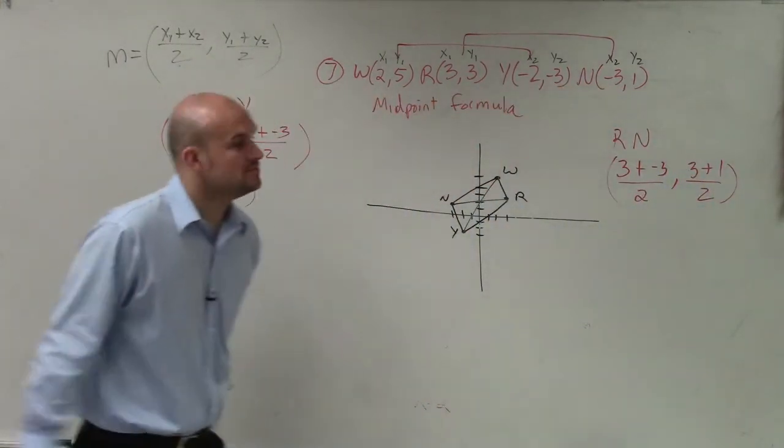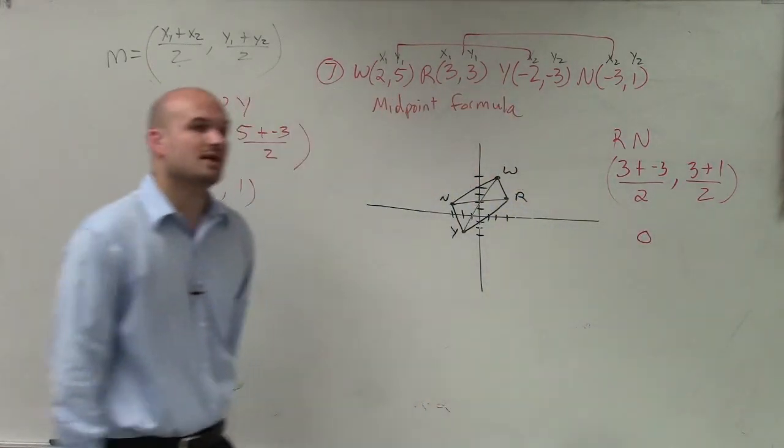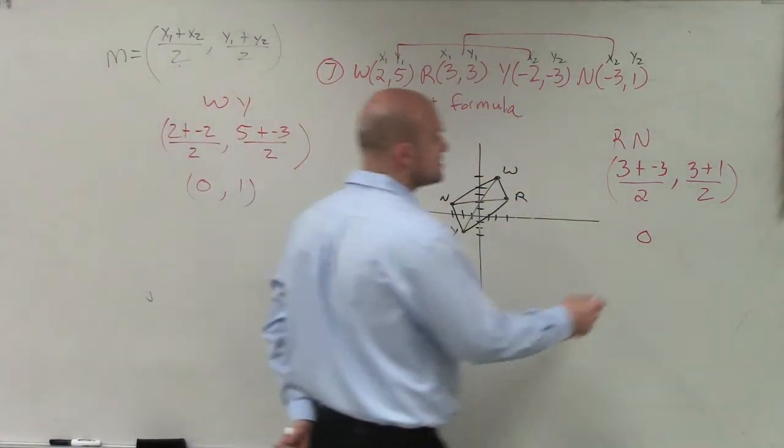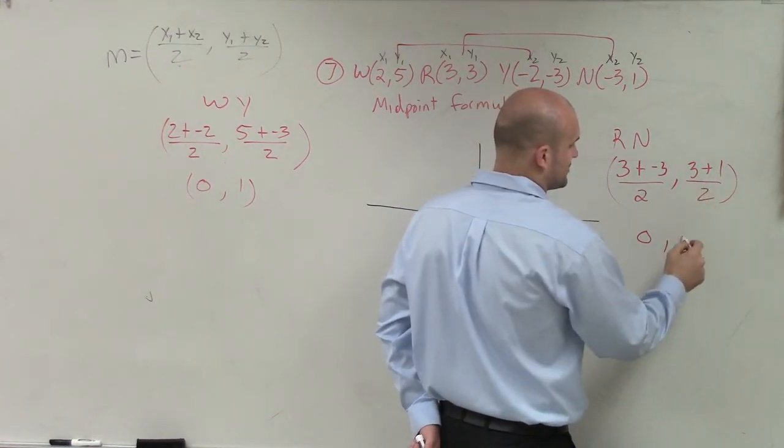3 + -3 is 0, 0 / 2 is 0. 3 + 1 is 4, 4 / 2 is 2. Oh, that's 4, 4 / 2 is 2.